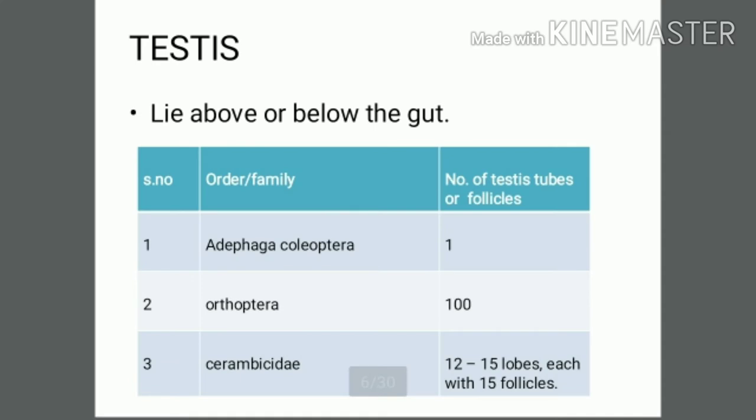The testis is located above or below the gut. The number of testis tubes or follicles varies: for example, Adephaga (Coleoptera) has one tube, Orthoptera has 100, and Cerambycidae has 12–15 lobes.